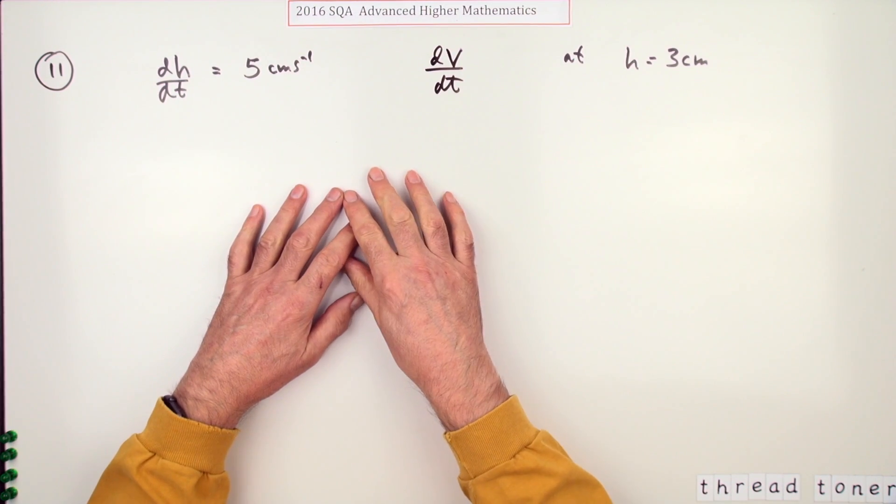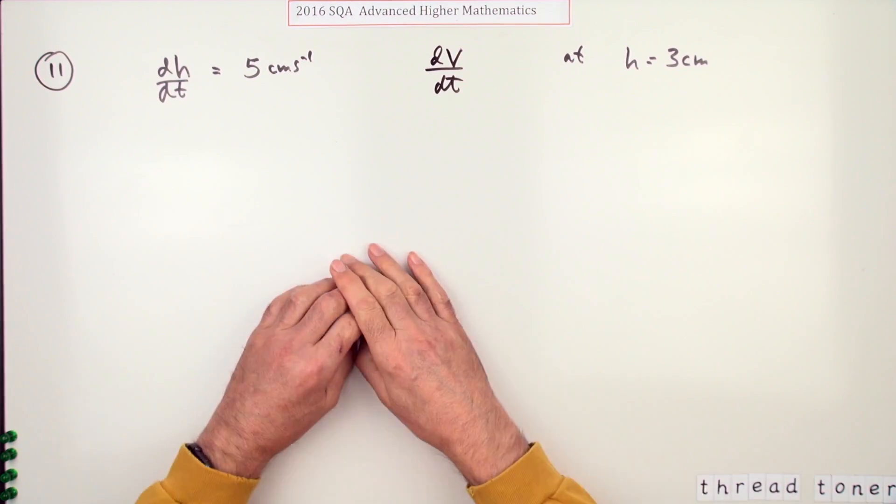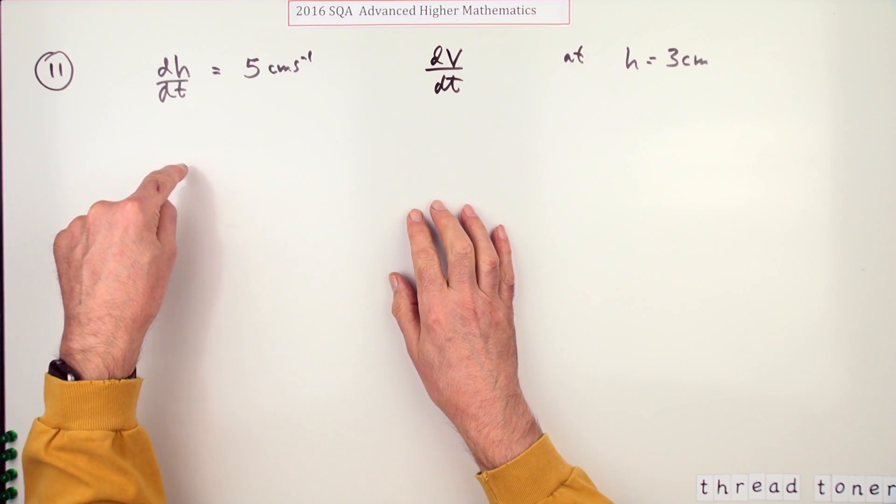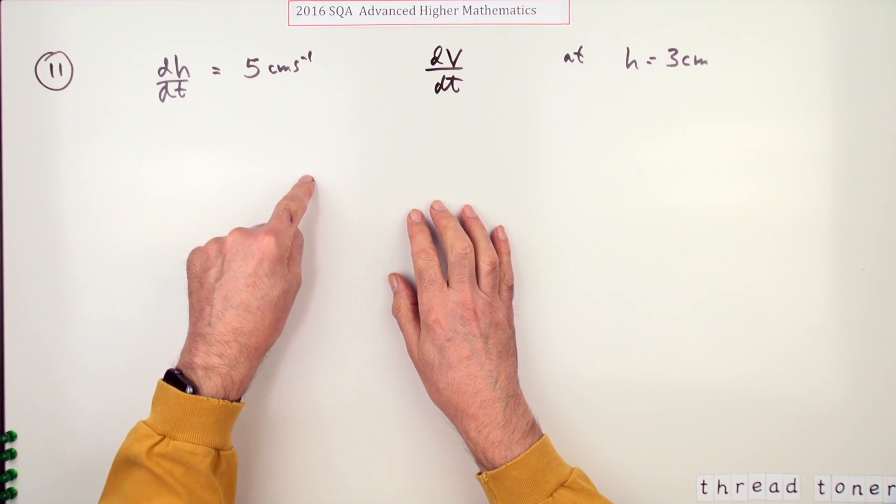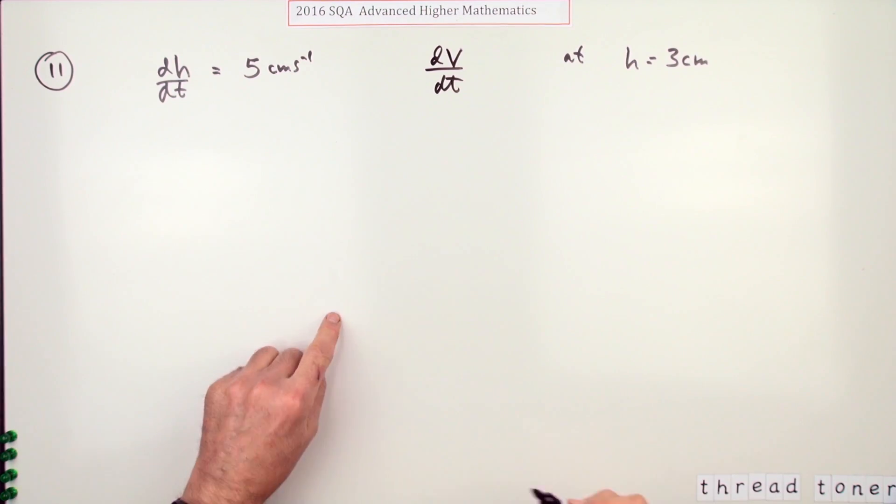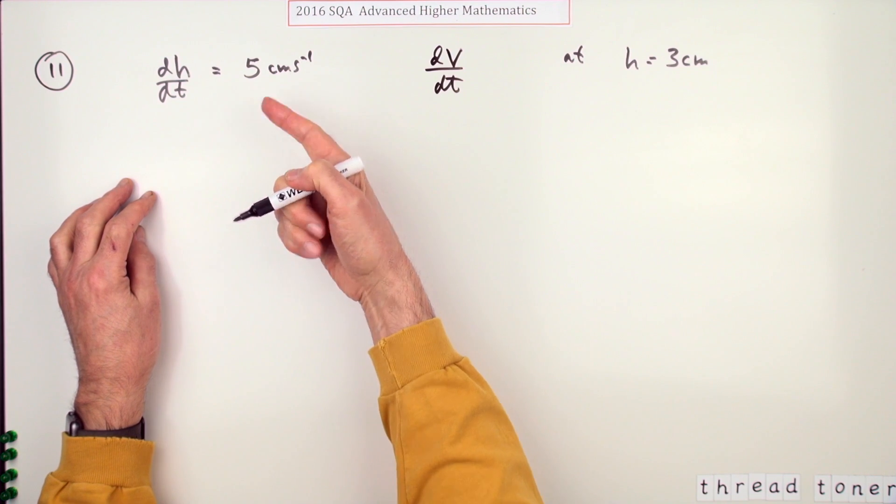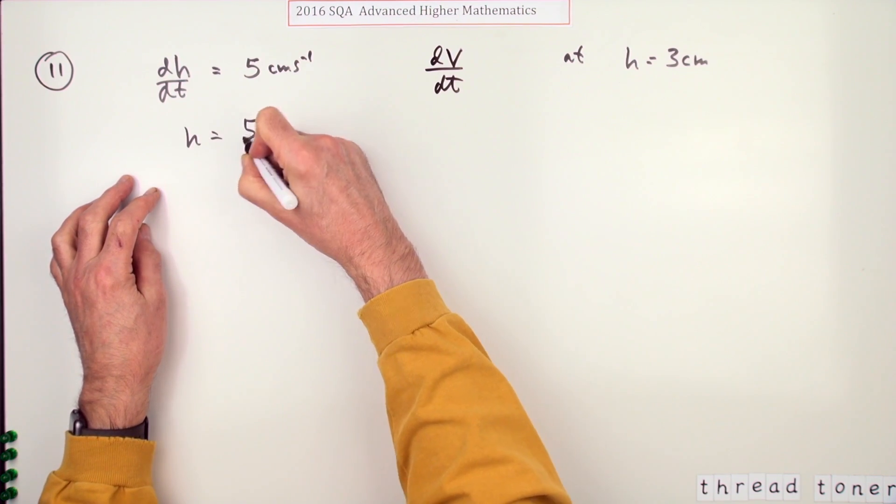Now there's a method two mentioned in the marking scheme. Well, there was actually method two over there, but you just differentiate implicitly, which is to get the volume directly as a function of time. And doing that just gets you one mark, and then you differentiate it and so on. But it takes a bit of time to get to that because you'd have to step back from here. If dh/dt is that, that means h must be 5t.